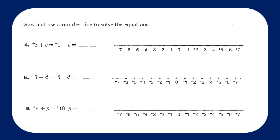Question 4: we're starting at positive 3 and we want to land at negative 1. We are going to have to leap 1, 2, 3, 4 spaces to the left, which is decreasing our number. So we have added a negative 4. Positive 3 plus negative 4 gives us negative 1.